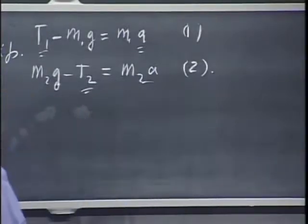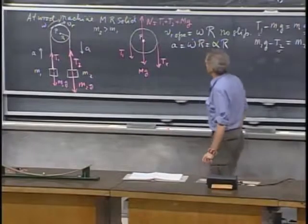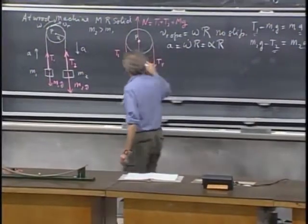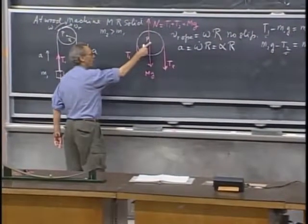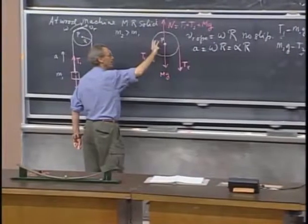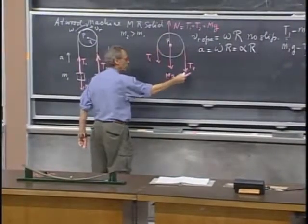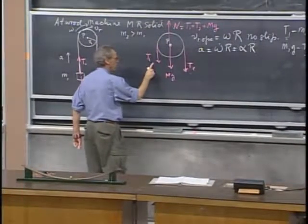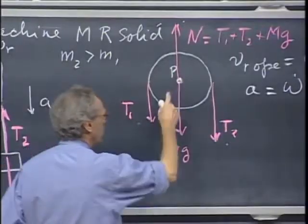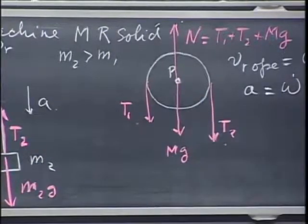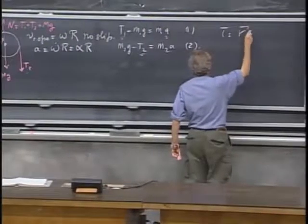The pulley... The net force on the pulley is zero. That's why this stays in place, but it's going to rotate because this force, T2, is larger than T1. There is a torque relative to that point P, and torque is defined as R cross F.